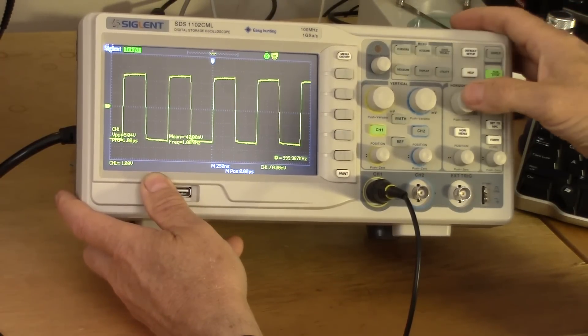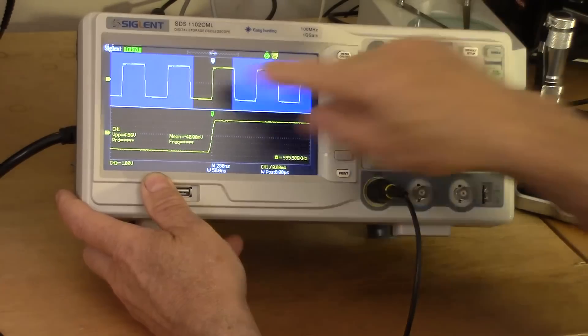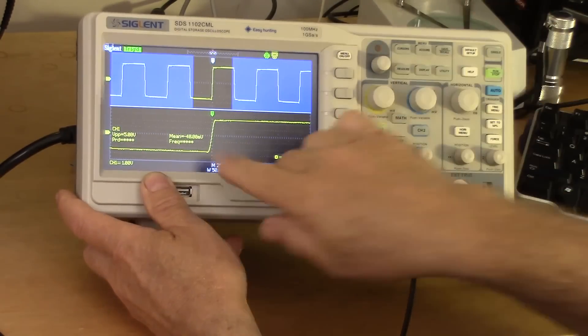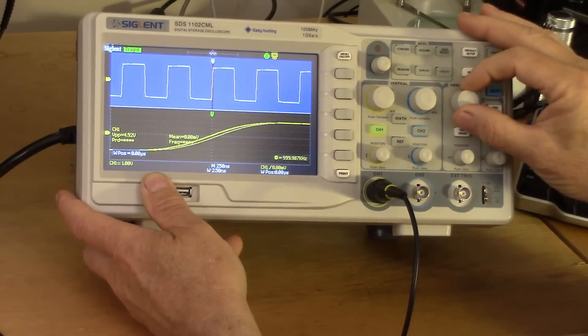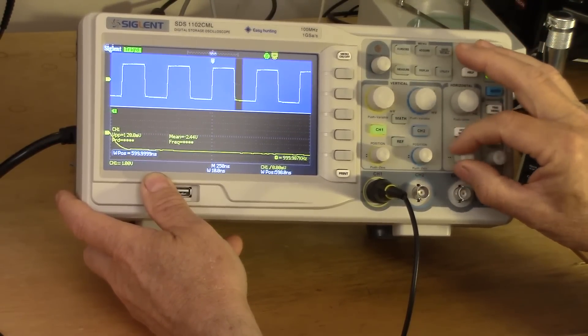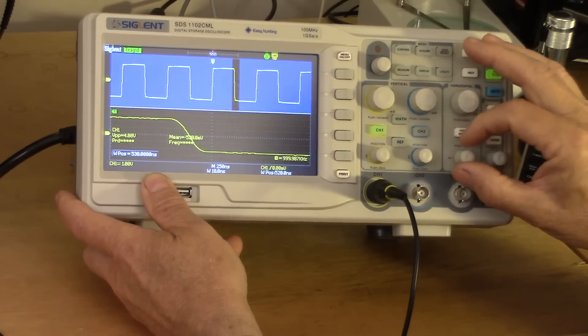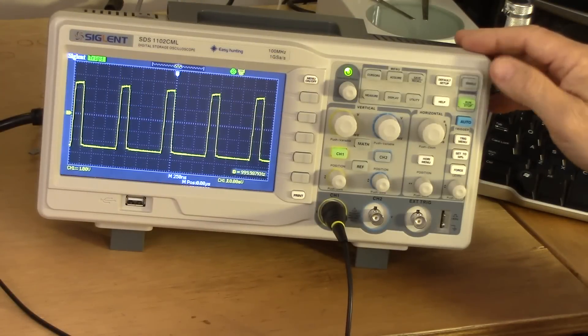One of the really nice features is if you press the horizontal button, you get a zoom. So there is our square wave being displayed and here's a blown up section of it. I can change that or of course I can move the window across the screen so you can examine in great detail small sections of your waveforms.